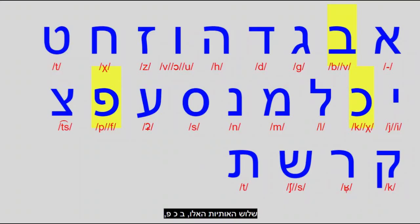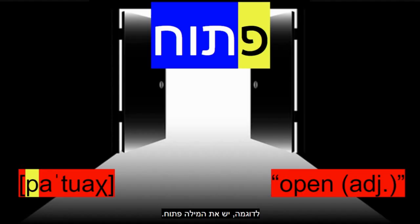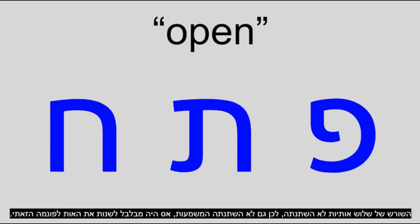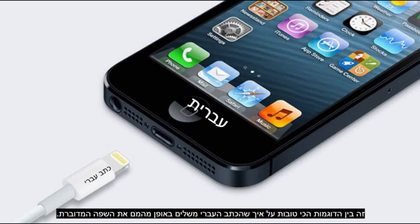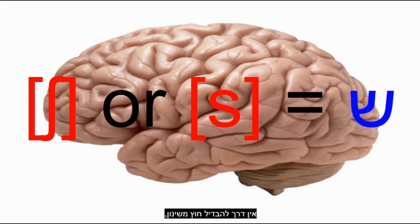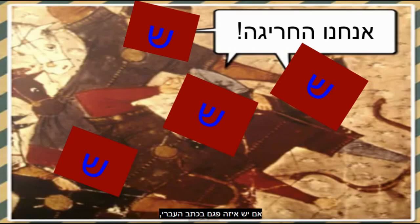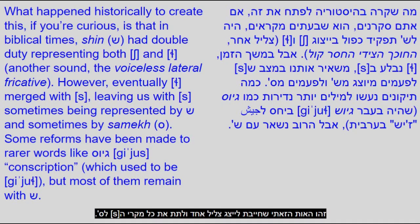The letters Bet, Kaf, and Pe are the ones affected by spirantization. For example, the word for 'open' in adjective form is 'patuach,' but in infinitive verb form it's 'liftoach.' The three-letter root didn't change, therefore neither did the overall meaning, so it would be confusing to change the letter for that phoneme. This is one of the best examples of how the Hebrew script complements the spoken language. On another note, the letter Shin can be said either Sh or S — there's no way to tell the difference except memorization, and one would be misunderstood if they used the wrong fricative. If there's any flaw in the Hebrew writing system, it's this one letter.